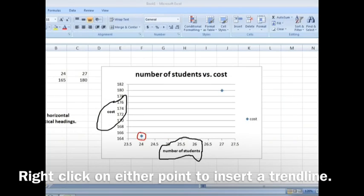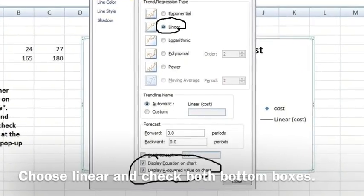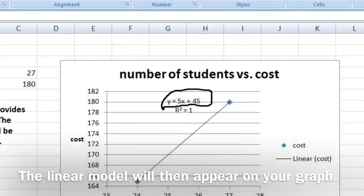Right click on either point to insert a trend line. Choose Linear and check both bottom boxes. The linear model will then appear on your graph.